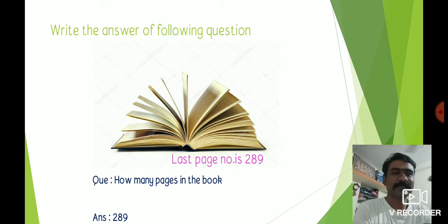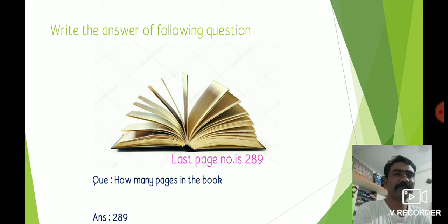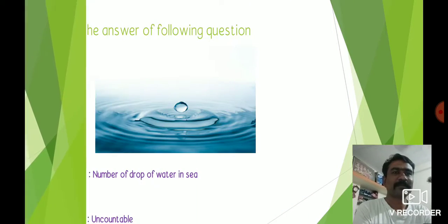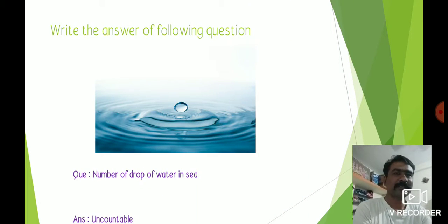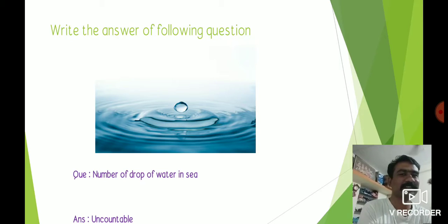In this picture there is a book and the last page number is 289. The question is: how many pages are in the book? The answer is 289. Now see the next picture: how many drops of water are in a sea? The answer is: we cannot say — this is uncountable.